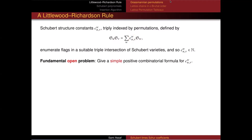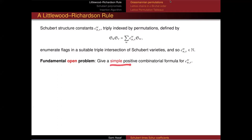There are these polynomials that are a basis for the polynomial ring. I can multiply them, expand back in the basis, and look at the structure constants. The fundamental problem I'm trying to solve is to have a combinatorial formula for these numbers. These numbers count flags in a triple intersection of Schubert varieties — but I can't use that because I can't compute it. I'm looking for something simple I can explain to a child or a computer. The gold standard is the Littlewood-Richardson rule for Schur polynomials: skew tableaux satisfying a simple condition.